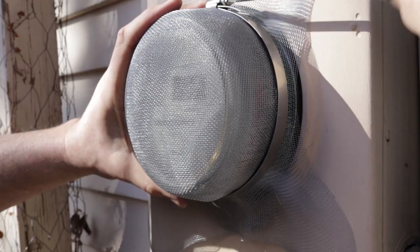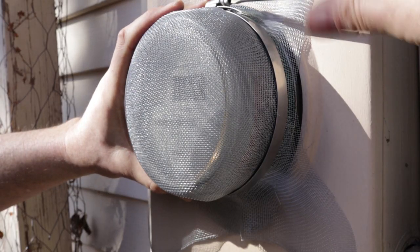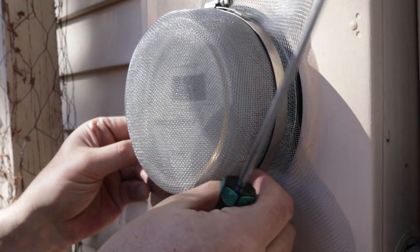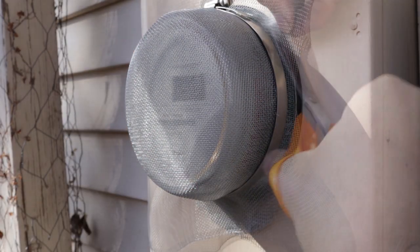Tighten the hose clamp firmly, but not too tightly so it doesn't crack the housing. Then cut the excess screen off with scissors.